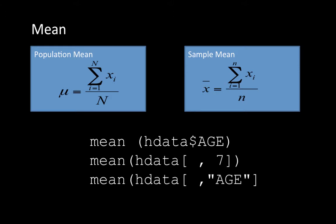So Xi, when i varies from 1 to N, will be X1, X2, X3, X4 up to Xn. The numerator gives you the total of all the values and the denominator is basically N, which is the total number of values. In statistics, it is common to use the capital letter N to represent the size of the population and the small letter n to represent the size of the sample.